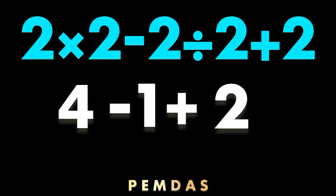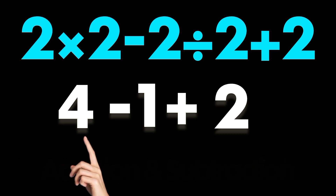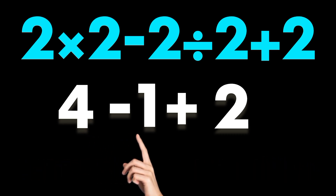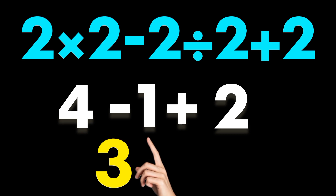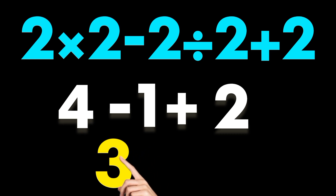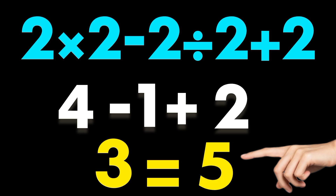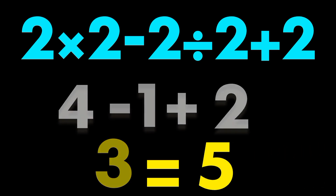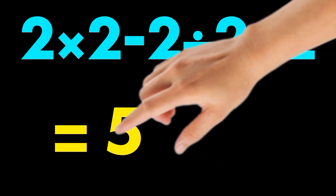Step 2: Addition and subtraction come next, also from left to right. 4 minus 1 equals 3. Then 3 plus 2 equals 5. The correct answer is 5, not 3.